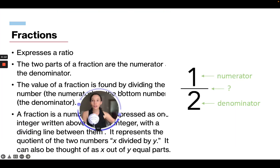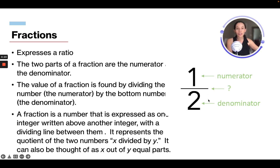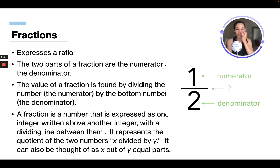So the first thing we're going to talk about is fractions. A fraction expresses a ratio. The two parts of a fraction are the numerator and the denominator. The denominator is always on the bottom and the numerator is on top. A fraction is a number expressed as one integer written above another integer with a dividing line between them.